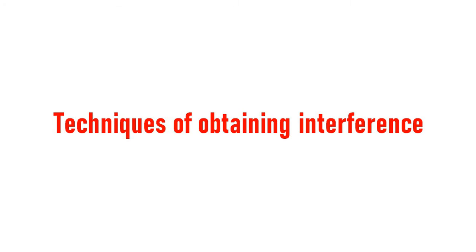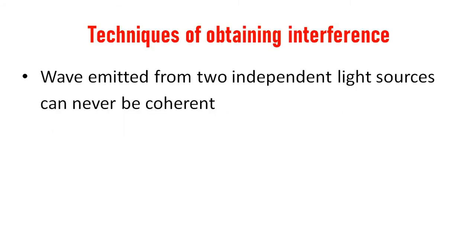Techniques of obtaining interference. The waves emitted from two independent light sources can never be coherent. To produce interference fringes we need coherent light sources. The waves emitted from two independent light sources rapidly change their phase, and therefore they cannot be coherent.